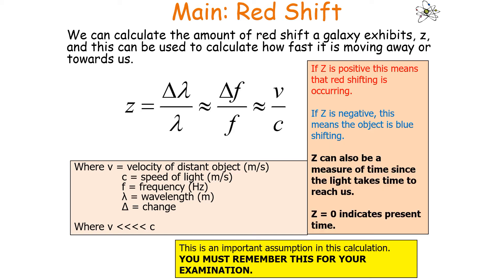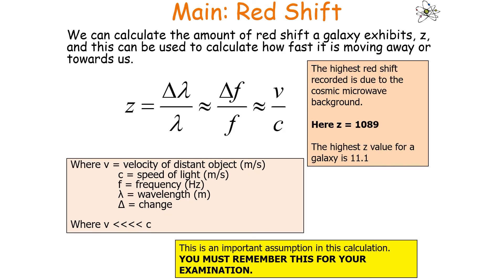z can also be a measure of time, since light takes time to reach us, so z = 0 indicates the present. The highest redshift recorded is from the cosmic microwave background where z = 1089, and the highest z value for a galaxy is 11.1.